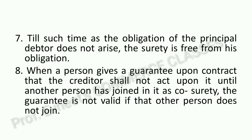Sixth: when a person gives a guarantee upon the condition that the creditor shall not act upon it until another person has joined as co-surety, the guarantee is not valid if that person does not join. Suppose a person says 'I will give a guarantee only if another person also joins me as guarantor.' If that co-surety does not join, then the guarantee is not valid.